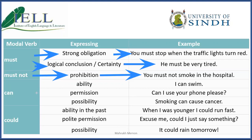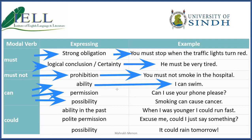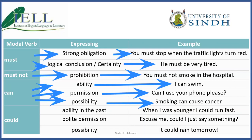Next, 'can' can be used for ability, permission, and possibility. For ability: 'I can swim' — that's my ability, I have this skill. For permission: 'Can I use your phone please?' or 'Can I borrow your pen?' — asking for permission. For possibility: 'Smoking can cause cancer' — this is a possibility that could happen as a result. So we also use 'can' for showing possibility.